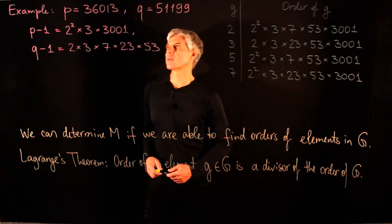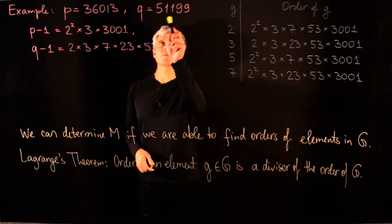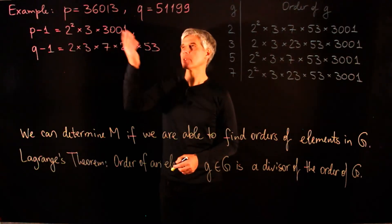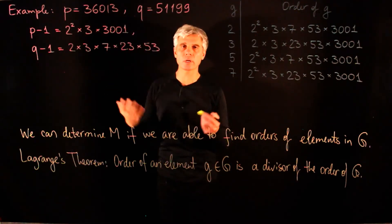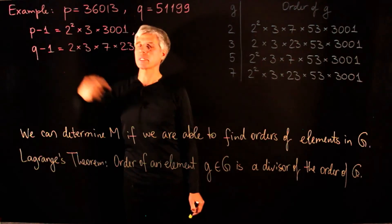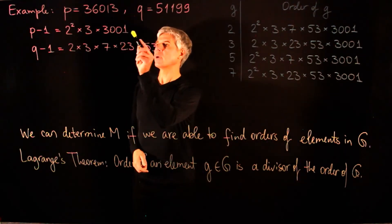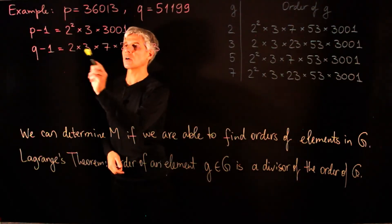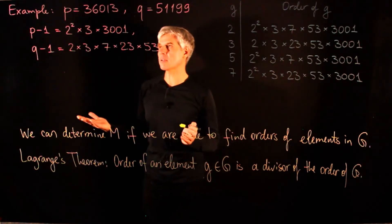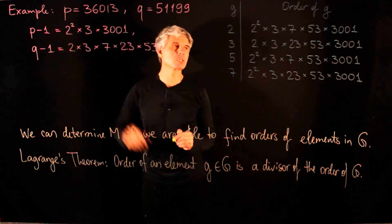Let us look at the following example. We take two primes: p = 36,013 and q = 51,199. These primes are by no means large, but they allow us to work out this small example. We are interested in p−1 and q−1 because they determine the orders of the groups. We can compute factorizations of p−1 and q−1 only because this is a small example; in general, even p and q are secret to us.